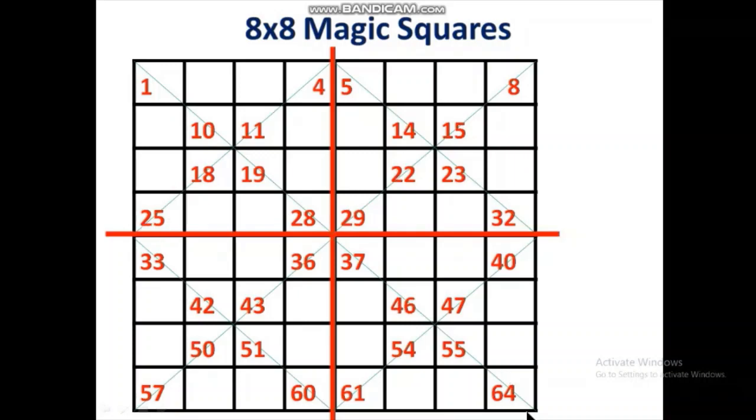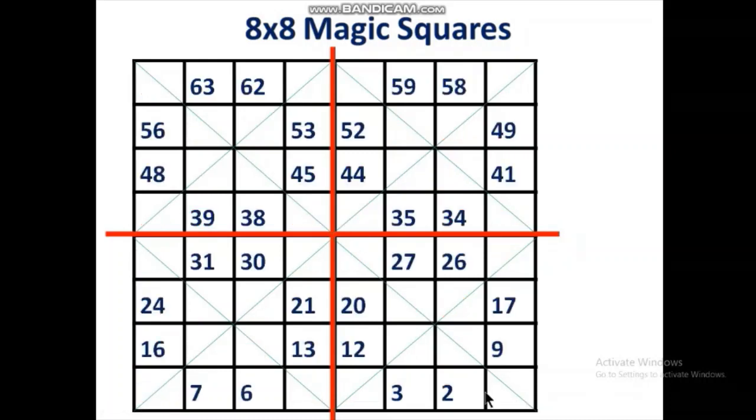Afterwards, how to fill remaining numbers? Here also we can fill in ascending order, all 1 to 64 numbers, but not from top left to right bottom. Here right bottom to top left we have to continue in this way.